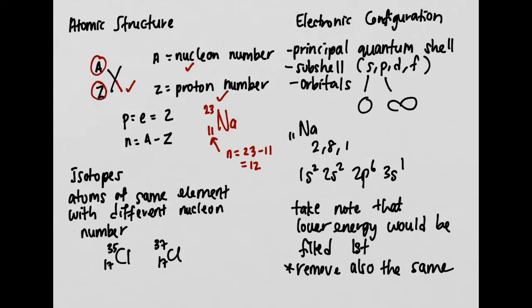The next part we need to remember is isotopes. What are isotopes? Isotopes are atoms of the same element with different nucleon numbers. When we say same element, it means they must have the same number of protons, but they have a different number of nucleons, which means a different number of neutrons.